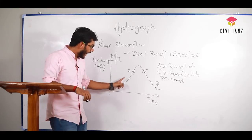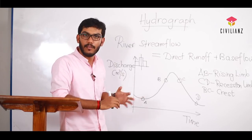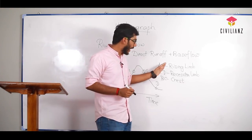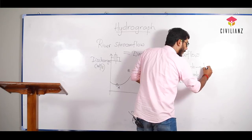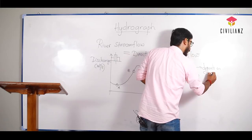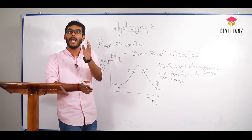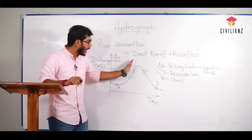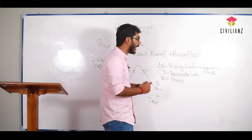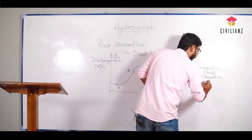The shape of the rising limb AB depends on climatic factors — if the location of a catchment area is similar, AB is similar. So the rising limb depends on climatic factors. The shape of the recession limb, however, depends only upon the basin characteristics.